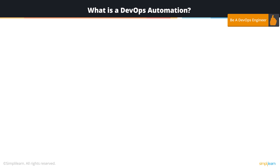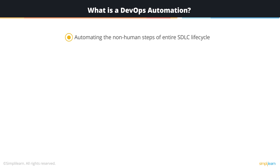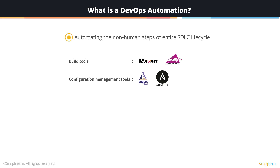In DevOps, we talk about a lot of automation using tools to automate the non-human steps that are part of your entire SDLC lifecycle. Automation can be achieved using various tools at different steps of your software development and delivery — like to create your build, to trigger your test cases, to deploy your build, and to run various other automation scripts. Build tools like Maven and Ant can help automate your build creation. You can use tools like Puppet and Ansible that can automate the configuration management for your entire environment setup.